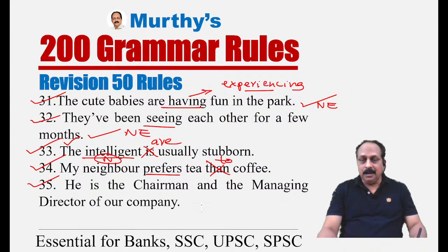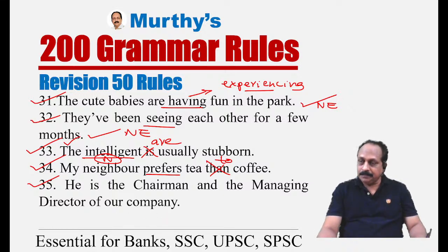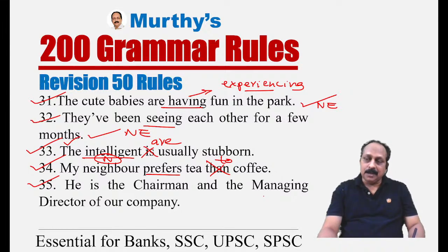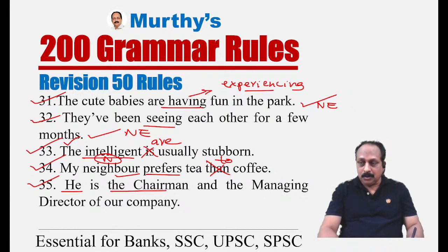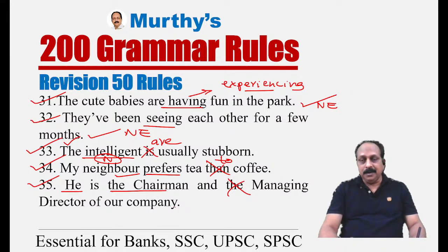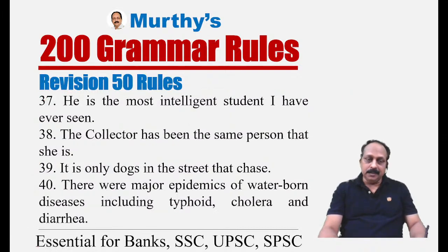Sentence thirty-five: 'He is the chairman and the managing director of a company.' When two nouns or adjectives refer to the same person, we should not use any article before the second noun. The sentence talks about only one person. So the second 'the' before 'managing director' is incorrect. The correct sentence: 'He is the chairman and managing director of a company.'